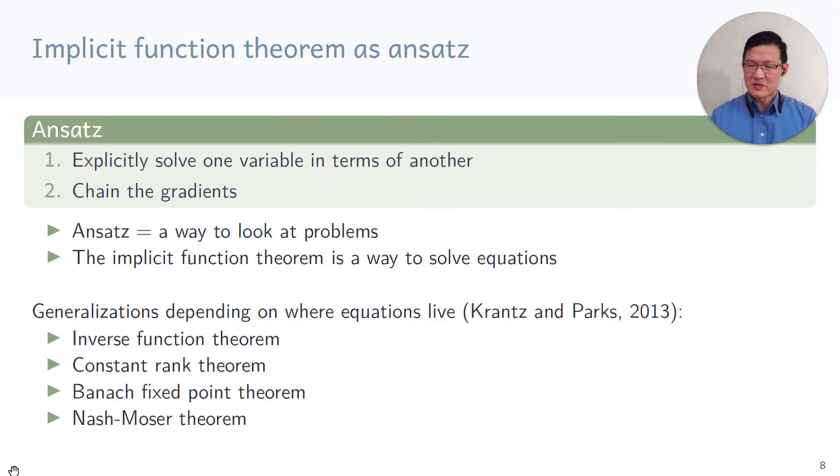Actually, to make it a bit more precise turns out to be quite difficult, because implicit function theorem is actually an ansatz, which is a way of looking at problems. So the ansatz is that you explicitly solve one variable in terms of another and then you chain the gradients together by looking at the chain rule. And in that sense the implicit function theorem is a way to solve equations.